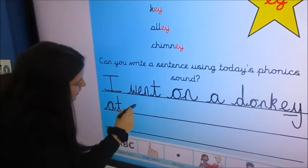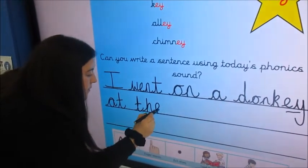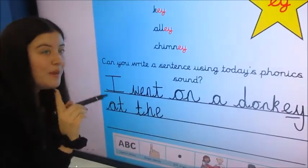Finger space. The. Tricky word. I went on a donkey at the beach.